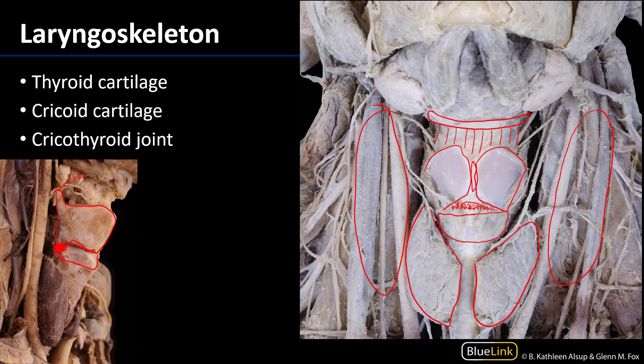When the cricothyroid muscle — which has been removed but which would be located there — contracts, it pulls the thyroid cartilage anteriorly and inferiorly. What that does is it puts tension on the vocal ligament, or the vocal cords, to increase pitch.